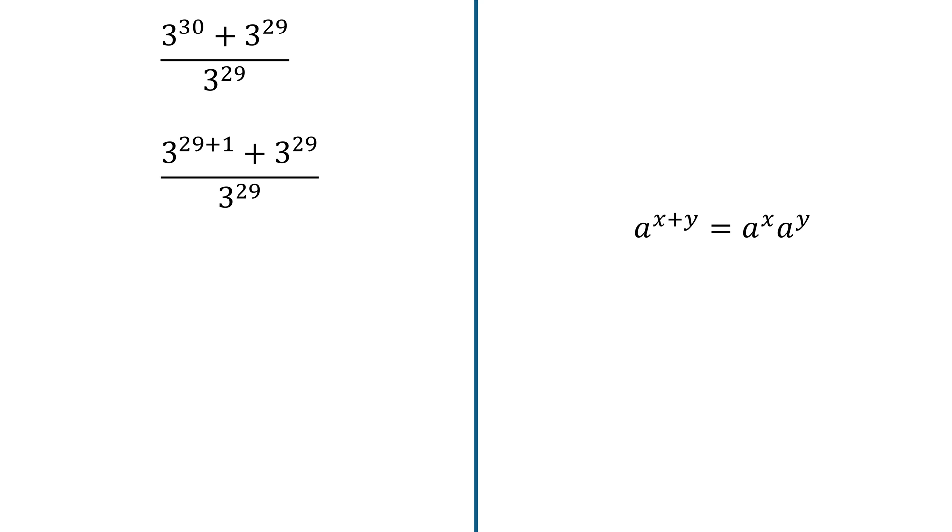So 3 exponent 29 plus 1 is the same as 3 exponent 29 times 3 exponent 1. So that's how our expression looks like right now.